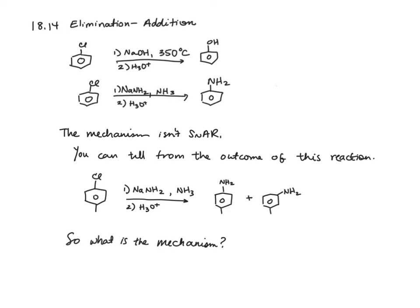The second reaction we're going to cover is elimination addition. Here we're taking an aryl halide with either sodium hydroxide or sodium amide and replacing the chloride with hydroxide or with an amine.